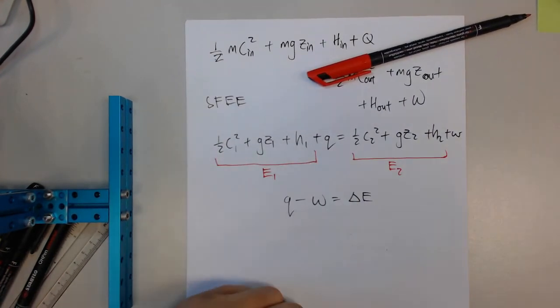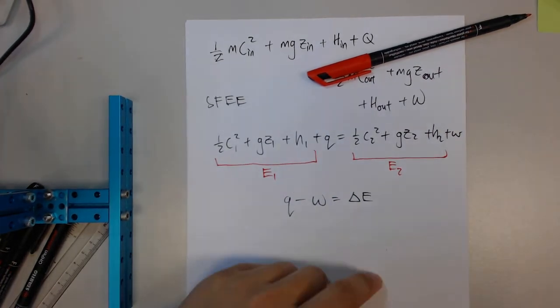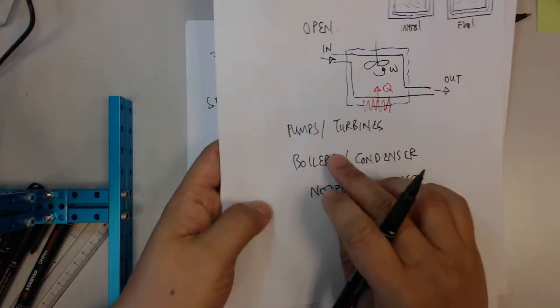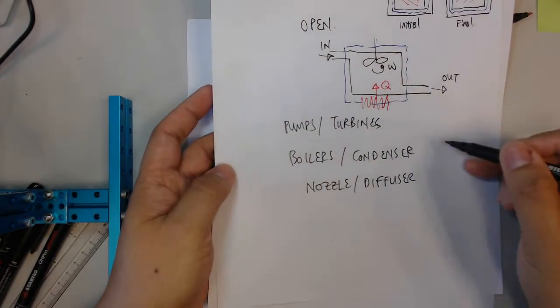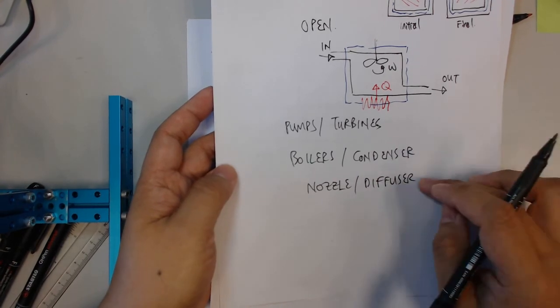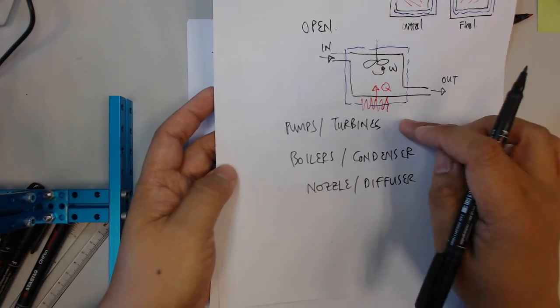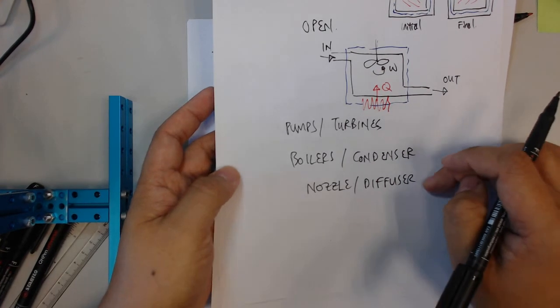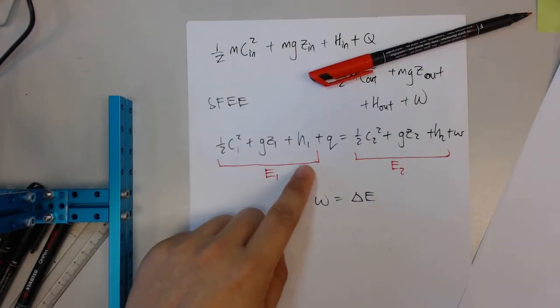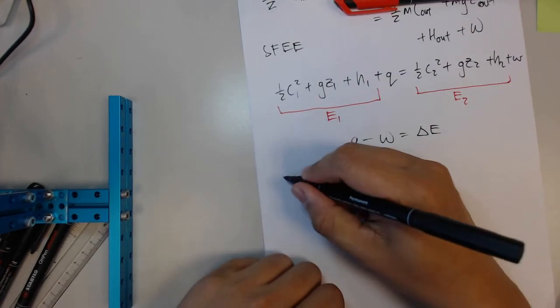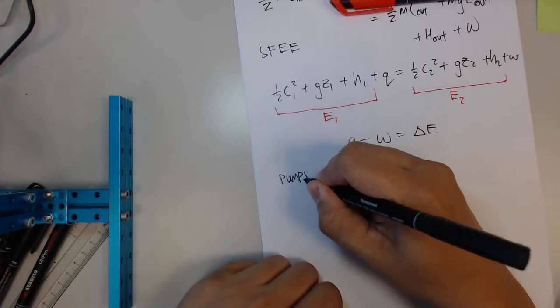Anyway, this equation will be given to you, but what is even more important is you remember when we were talking about the three different types of open systems: pumps, turbines, one class; boilers, condensers, second class; nozzles, diffuser, is the third class of open system. Depending on which device you're looking at, which class of device you're looking at, your first law, your SFEE can actually be simplified. So let's take, for example, pumps and turbines.